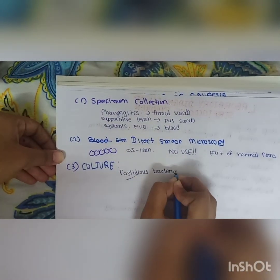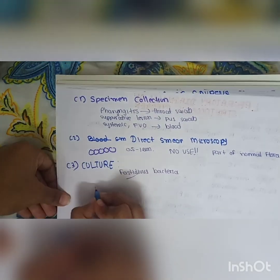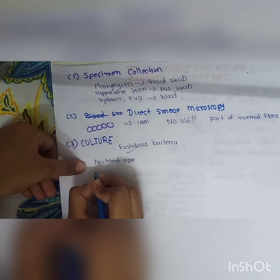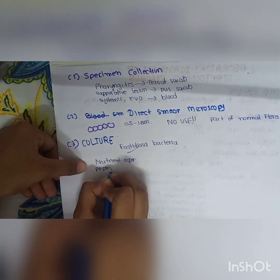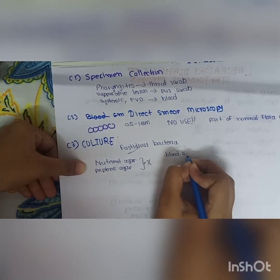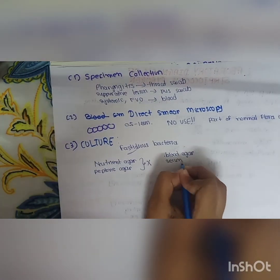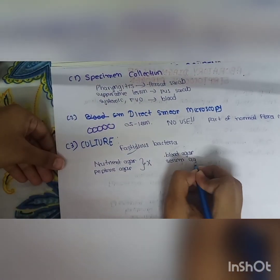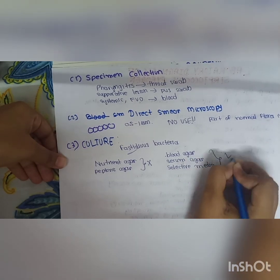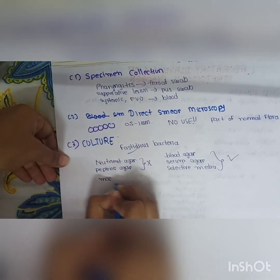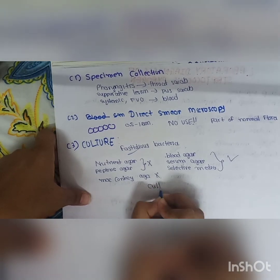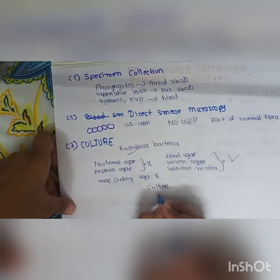The third method is culture. S. pyogenes is a fastidious bacterium and will not grow on basal media lacking special nutrients, such as nutrient agar with only peptones. They require enriched media. They grow on blood agar and serum agar, which contain special nutrients, but they will not grow on MacConkey agar.